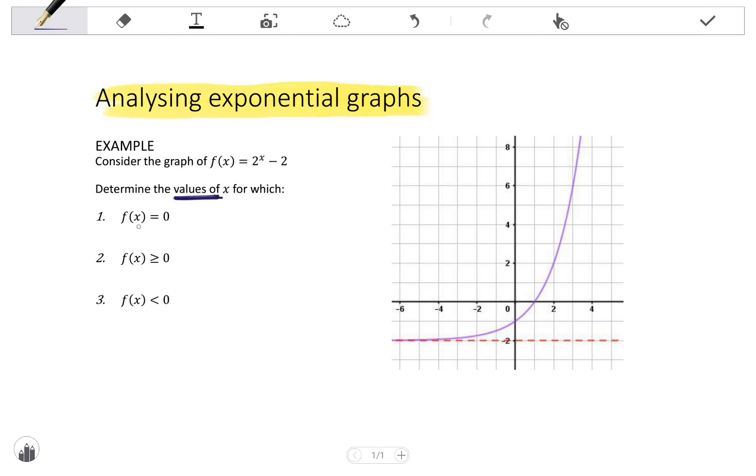For which f(x) equals 0. Now, that is where y equals 0, which means we are looking for the value of our x-intercept. From the graph, we see that the x-intercept is at 1, so we answer with the x value, x = 1.